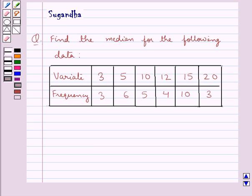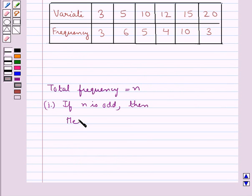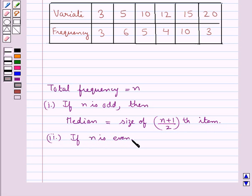First let's recall how we find the median for the given data. When we are given the total frequency to be n, then if n is odd then we have the median is equal to the size of n plus 1 upon 2th item.